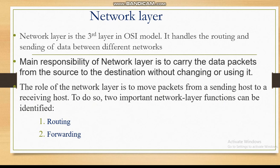Routing is used to determine the end-to-end path from source to destination. Forwarding is the router's local action of transferring a packet from an input-link interface to the appropriate output-link interface. The main responsibility of the network layer is to carry the data packet from the source to the destination, moving it from a sending host to a receiving host.